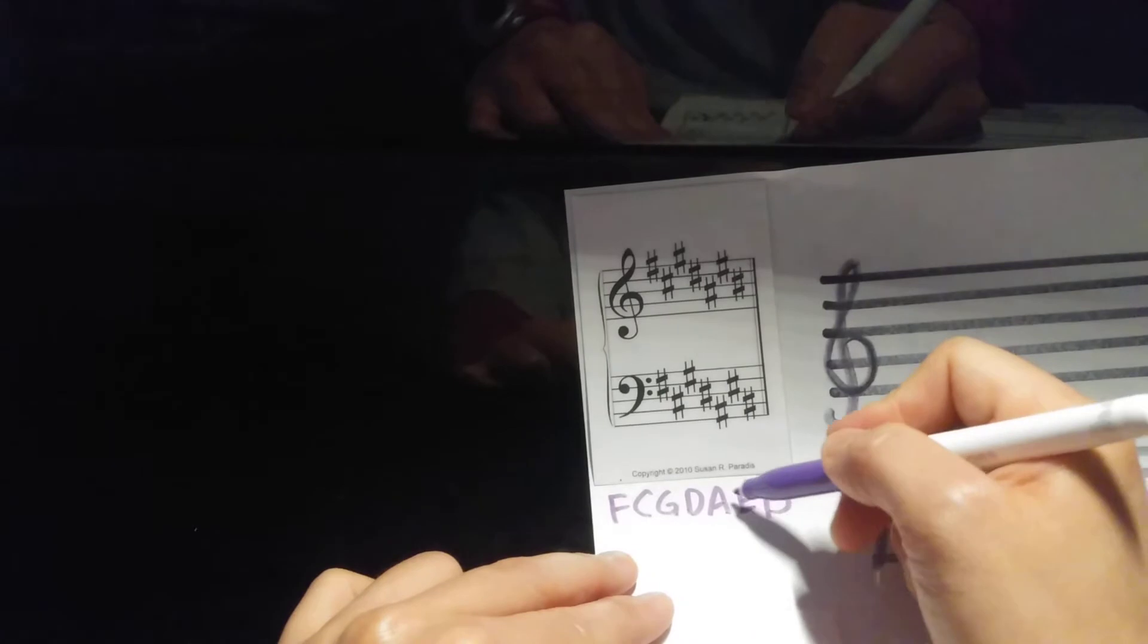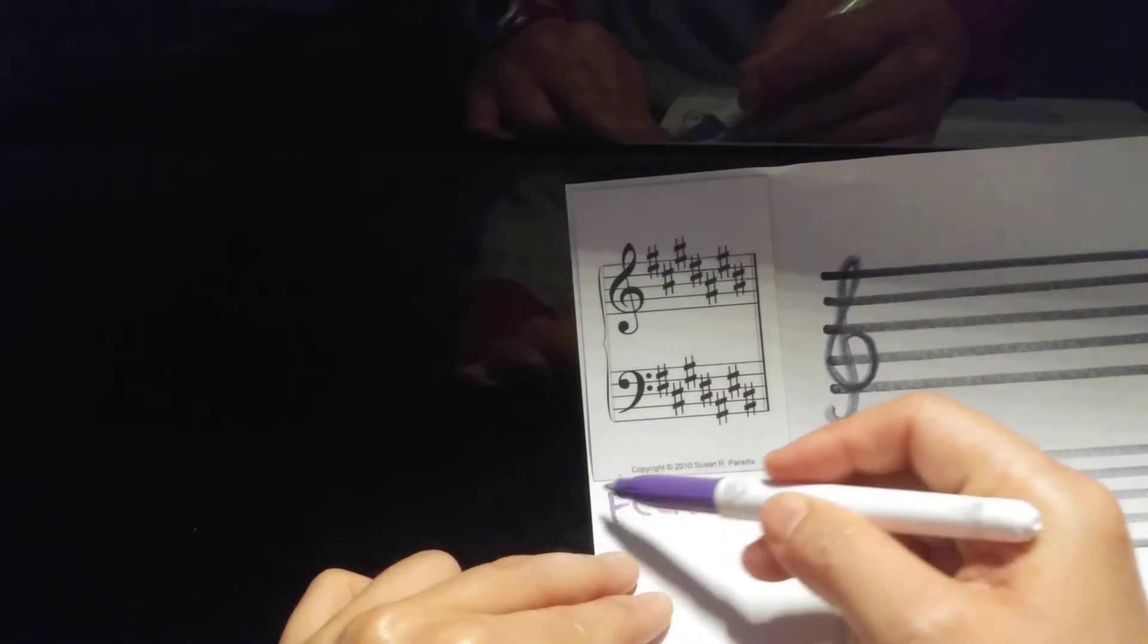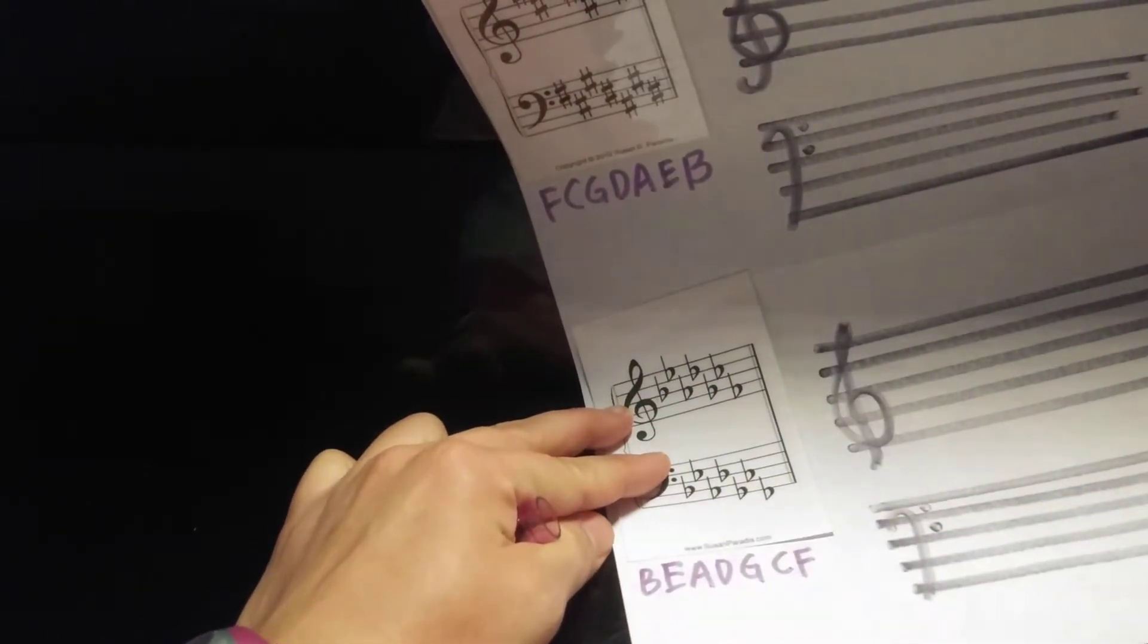So which is the reverse: B, E, A, D, G, C, F. So if you know the order of sharps, you just take it backward and you get the order of flats.